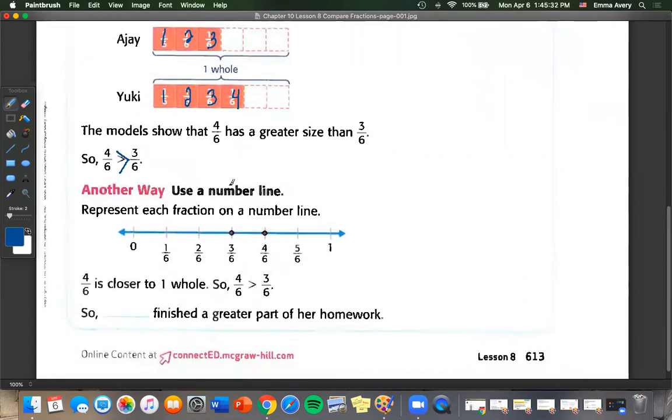Another way we can do this is on a number line. Because these numbers have the same denominator, the denominator is six, we can even put them on the same number line. We can see that four sixths is greater than three sixths. So Yuki finished a greater amount of her homework.